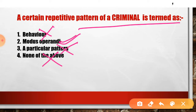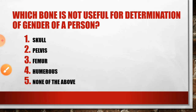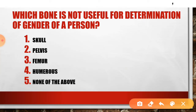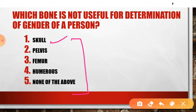Here is the next question: which bone is not useful for the determination of the gender of a person? Several bones are given as options. For gender determination, the pelvis is most useful. Femur and humerus are also options here.